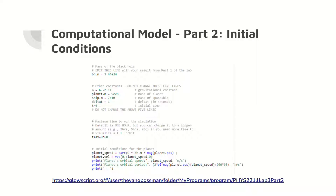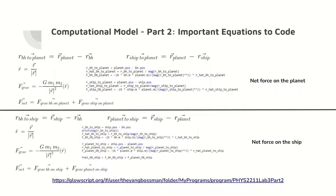Here are the initial conditions for part two of the lab, which include the mass of the black hole found in part one. The initial velocity of the spaceship is unknown, and the trial and error method is used to find the correct initial velocity. The important equations for part two include the distances between the masses, the r-hat values, the gravitational forces, and the net forces. These equations are converted to code for the iteration step.